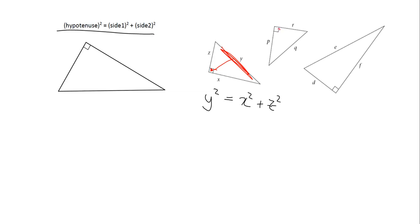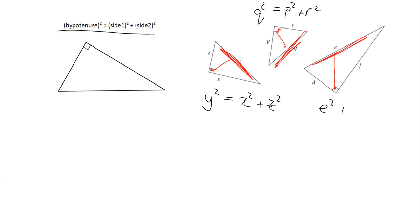For the second triangle: 90 degrees, so opposite it you've got your hypotenuse, and you can say q squared is equal to p squared plus r squared. And in the third case, here's your 90 degrees — opposite it you get your hypotenuse — so you can say e squared is equal to d squared plus f squared.